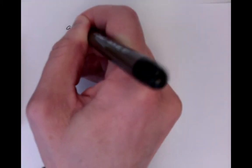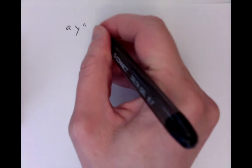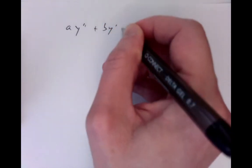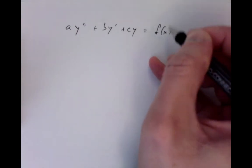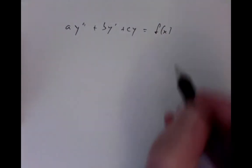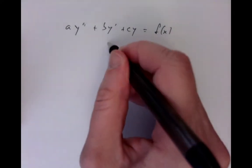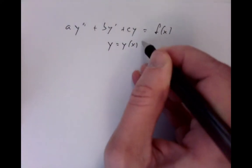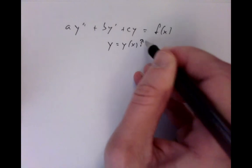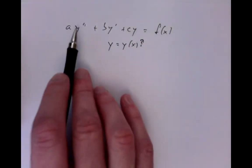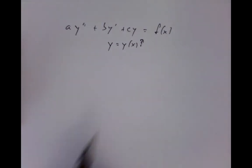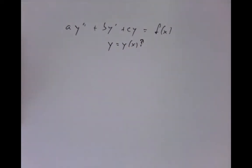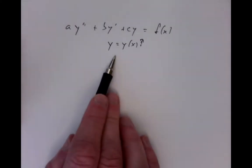These are equations that look something like this: a constant coefficient times the second derivative, a constant coefficient times the first derivative, a constant coefficient times y equals some function of x — the inhomogeneity — which is assumed known. The unknown is what function y equals y of x satisfies this differential equation. We're given a, b, c, and f explicitly, and we want to find an explicit formula for y of x.